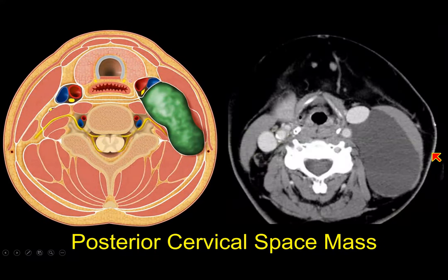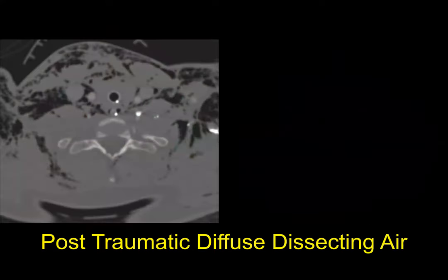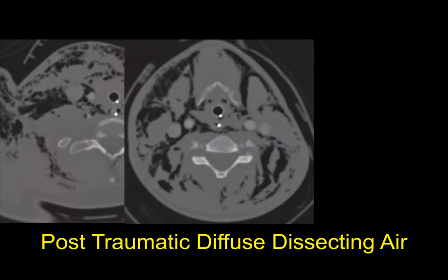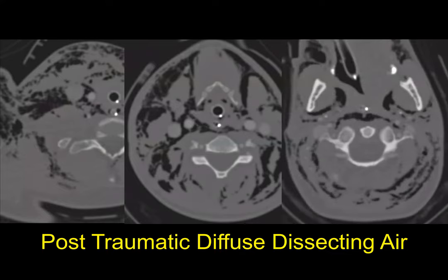If we have a generic lesion at that level, we can see how it pushes the SCM out laterally and pushes the carotid and jugular anteriorly, and it's going to be lateral to that perivertebral fascia around the vertebral bodies. If we have a really bad trauma patient with diffuse subcutaneous air tracking up — for example from bilateral pneumothoraces with multiple rib fractures — we can actually see the air dissecting up around these fascial slips and into these spaces, giving us a good idea of where all these spaces are.